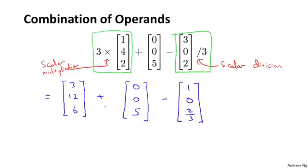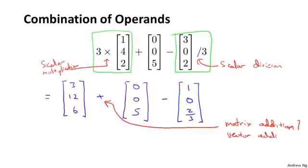And again, just to make sure we understand what's going on here, this plus symbol, that is matrix addition, or really, since these are vectors, we can also call this vector addition. And this minus sign here, this is matrix subtraction.